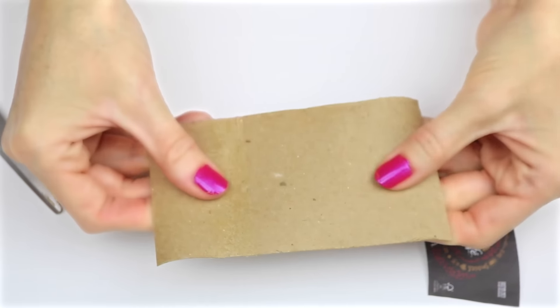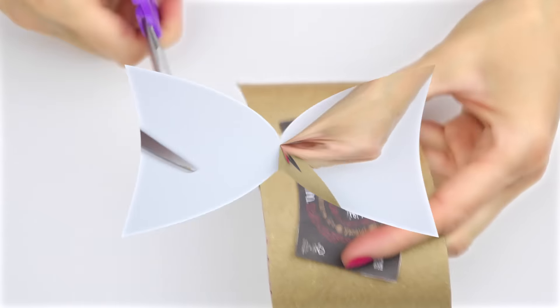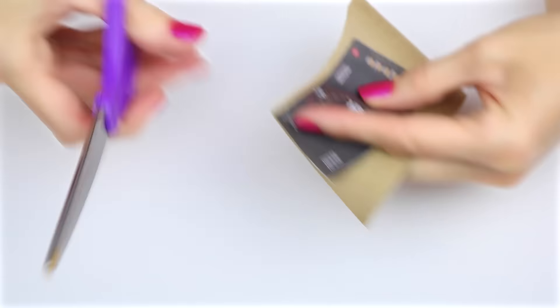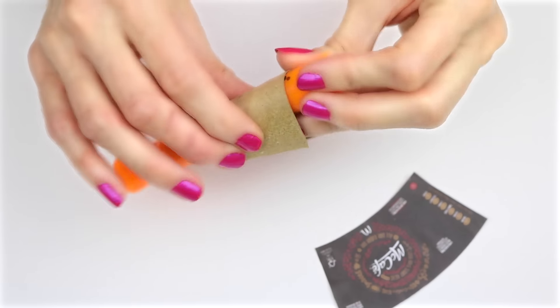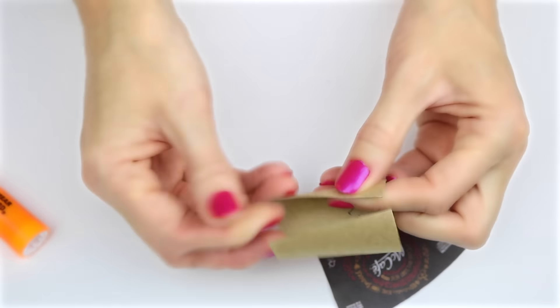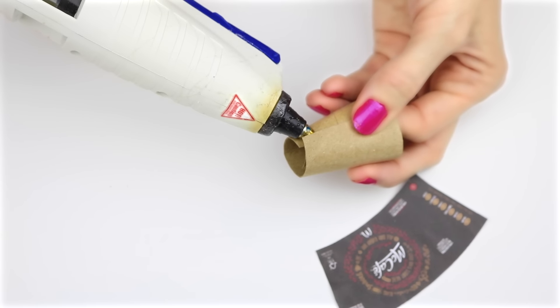Cut the toilet paper roll so it opens up. Place the printable on top, and cut around it, leaving a border. To help the toilet roll piece form the cup shape, I wrapped it around a marker. Hot glue the toilet roll piece together.